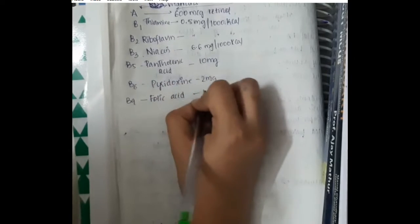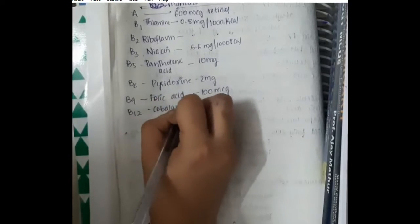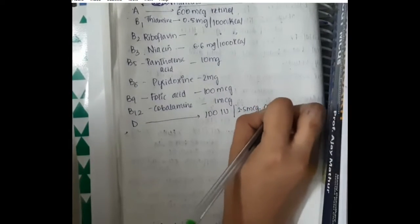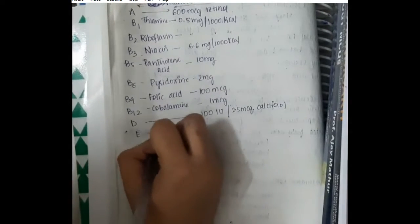RDA for folic acid is 100 micrograms. RDA for cobalamine is 1 microgram. Vitamin D is 100 international units or 2.5 micrograms of calciferol.